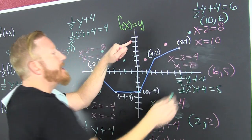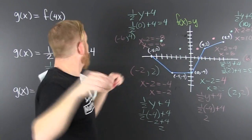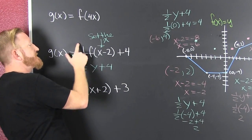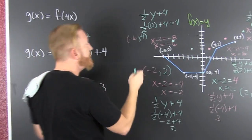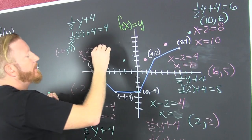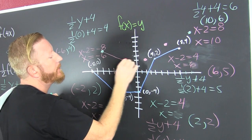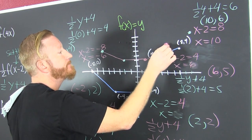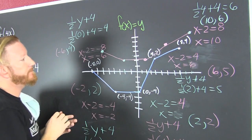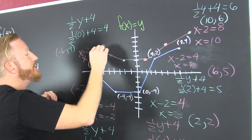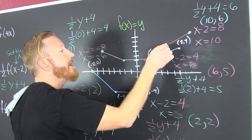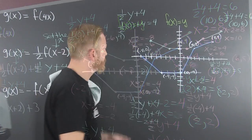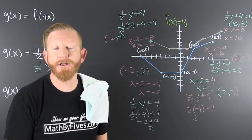So for translating this g of x, which is one half of the previous f of x shifted right 2 and up 4, it's going to look like this guy. It has the same basic shape, but it's squished, shifted, and shifted again.